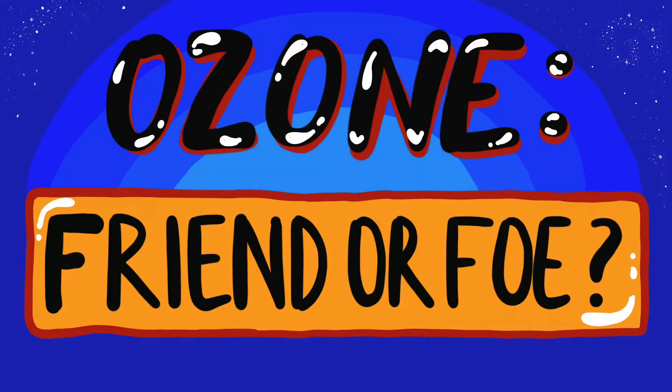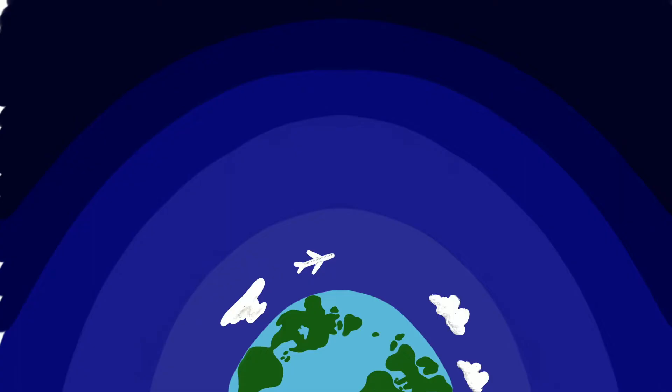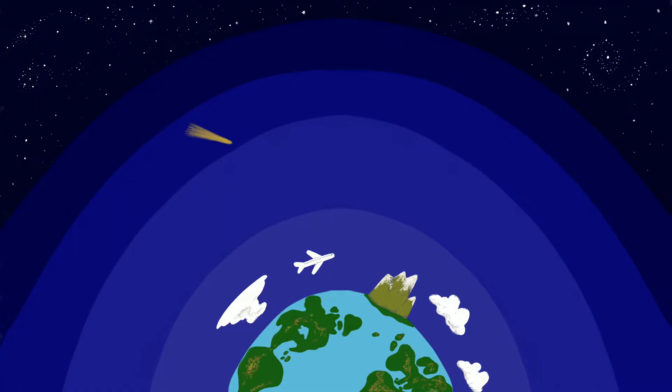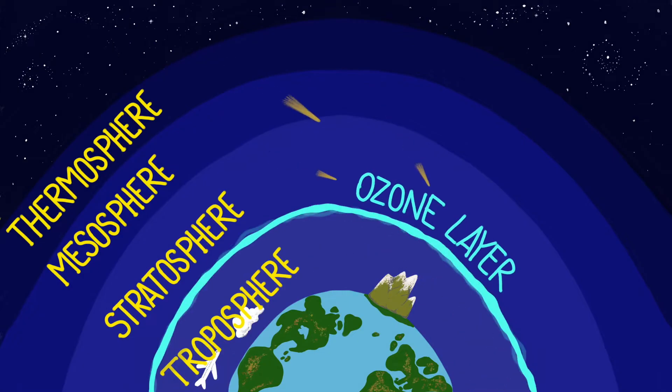Ozone: Friend or Foe? When we think of ozone, many of us think about the hole in the ozone layer, located high up in the stratosphere, about 12 kilometers or 7 miles above the Earth's surface.